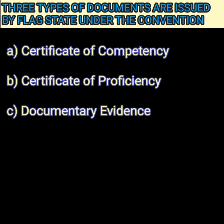As per the STCW code, there are three types of documents issued by the flag state under the convention: one is called Certificate of Competency, second is called Certificate of Proficiency, and third is called Documentary Evidence. Let's go through what each really means.